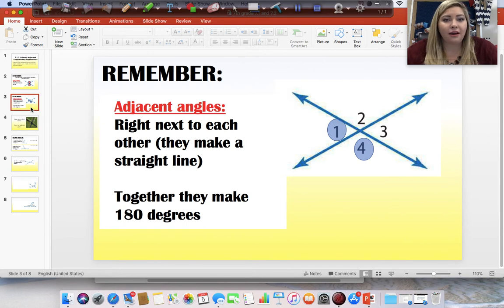Next are adjacent angles. Adjacent means it's right next to each other. If somebody is adjacent to you, they are right next to you. So, they make a straight line. Adjacent angles make a straight line and together they equal 180 degrees.